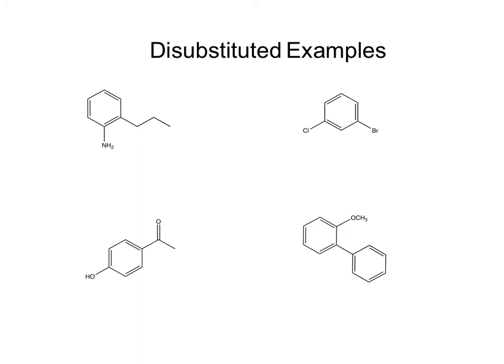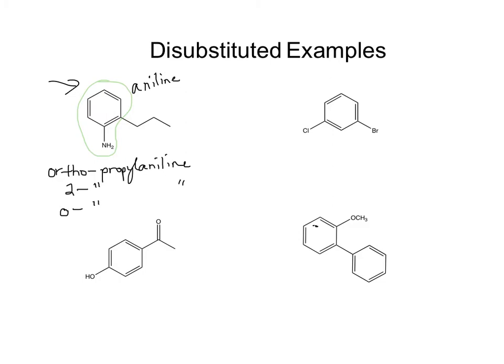Looking at our first example with the NH2: if you look at that list, this particular group on the benzene has a common name — it's called aniline, A-N-I-L-I-N-E. There's a propyl group off the aniline in the ortho position. So we would call this ortho-propylaniline. You could also write it as o-propylaniline, where O is short for ortho.